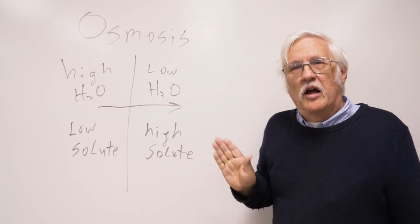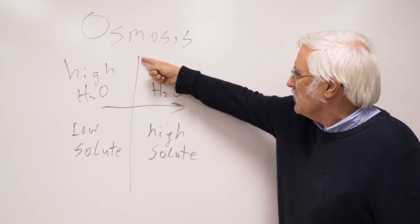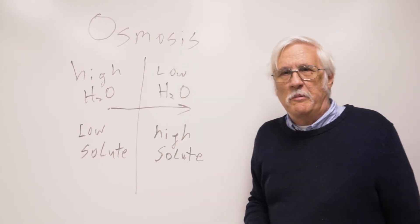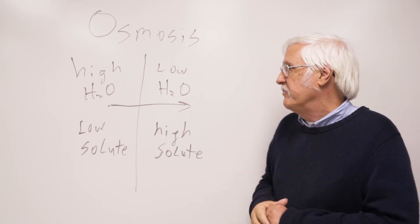Osmosis is a property of biological membranes. This line represents the plasma membrane, which is a shell around the outside of the cell.